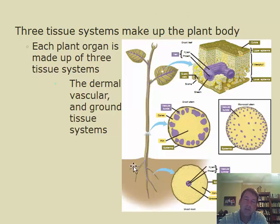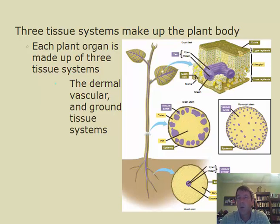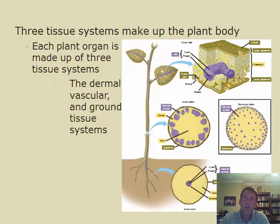Everything else in the plant body is ground tissue, which fills in the remaining space. We'll stop here and pick up in the next podcast to continue our discussion of plant structures.